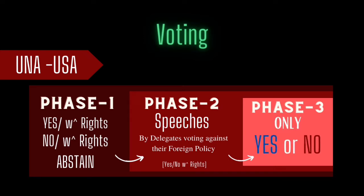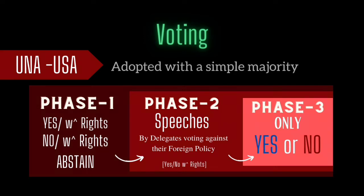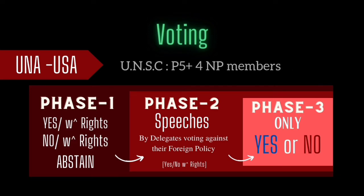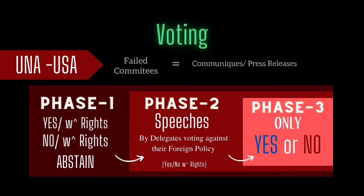After this third phase of voting, if the draft resolution gets a simple majority of votes, it is adopted as a resolution for the committee. If the DR fails to get this majority, the document fails and by default the committee too fails. In the case of the UNSC, a delegate needs to get not only the simple majority but also the vote of all P5 members — even if one P5 member chooses not to vote, the DR fails. Committees that fail can draft additional documents such as press releases or communiqués explaining the happenings in the committee and the reasons for failure, at the discretion of the committee dais. After this, irrespective of the draft resolution being adopted or rejected, the delegates should motion to adjourn the debate, with which the committee comes to an end.